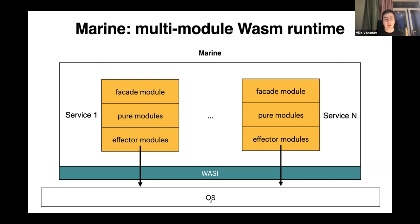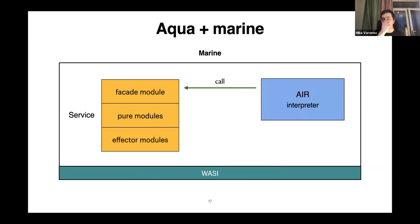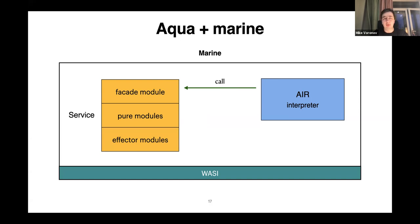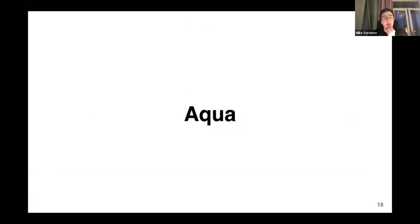Services can't call each other — they are isolated from each other's effects, memory, and so on. It's important that our AIR interpreter — that's why I'm talking about this at a WebAssembly meetup — is written in Rust and compiled to WebAssembly. It's also compiled to a module that can be loaded inside Marine, our runtime. But this module has an important feature compared to other services or modules inside Marine: it can call other services by a special host closure.